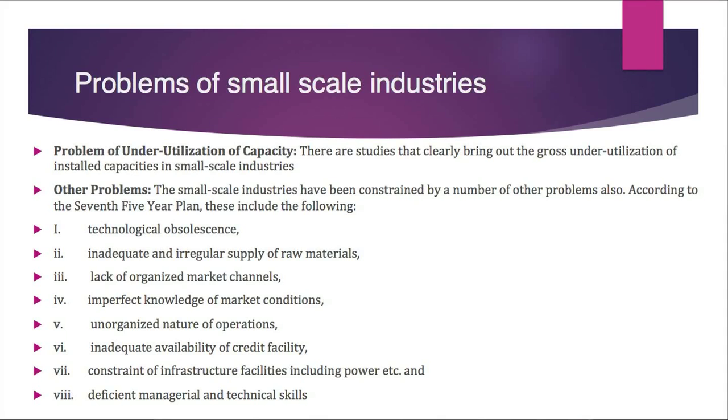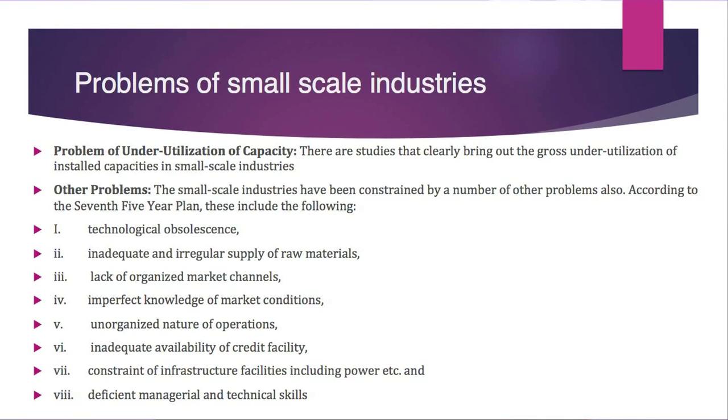Other problems include technological obsolescence — modern machinery and equipment are much more costly, so small scale industries use outdated technology, which affects output and production. There is also inadequate and irregular supply of raw materials; if raw material supply is not flowing smoothly, it affects the production process.